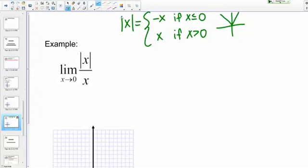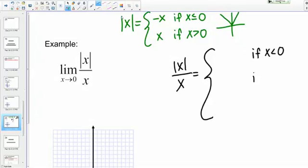Let's use that same logic to express the absolute value of X over X as a piecewise function. When I write this piecewise function, I'm actually going to split it into three pieces. The reason I'm doing this is because X equals 0 is sort of a special case with this function, and it's going to make it easier to think about if we think about it as three separate pieces.